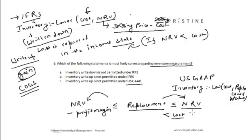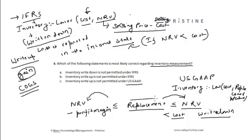If the replacement value is less than cost, we must perform an inventory write-down and the loss is reported in the income statement. However, if the net realizable value or replacement cost increases in the future, no write-up is allowed under US GAAP.